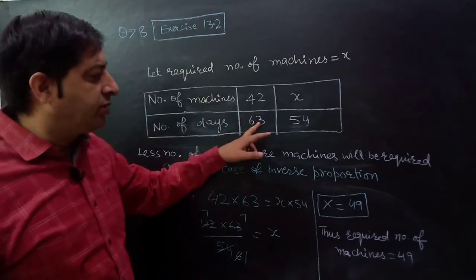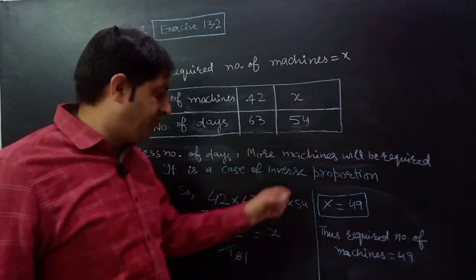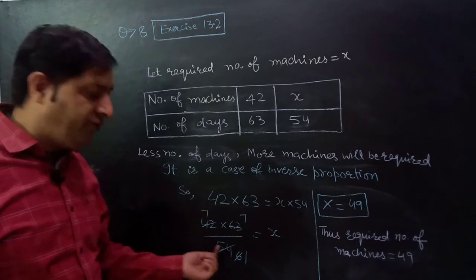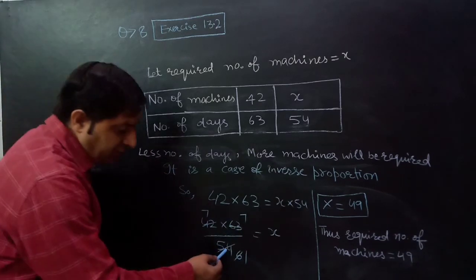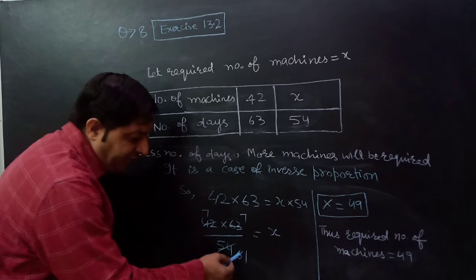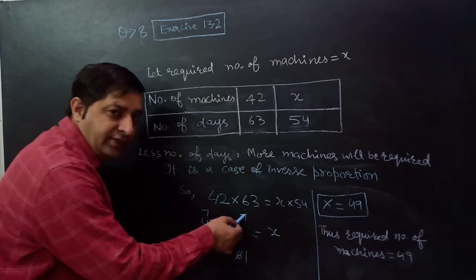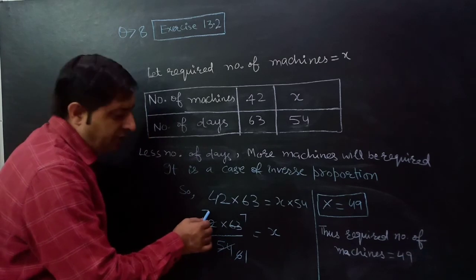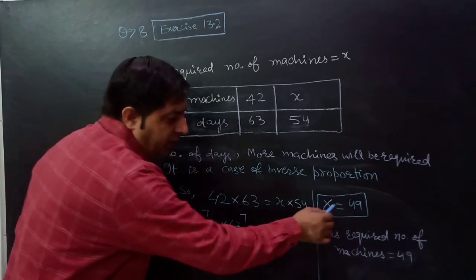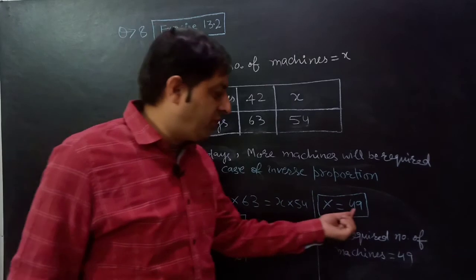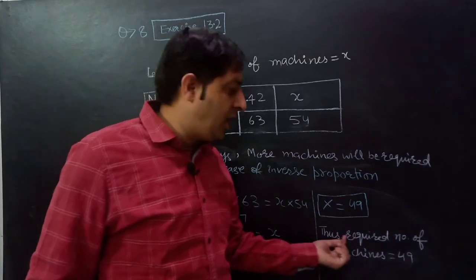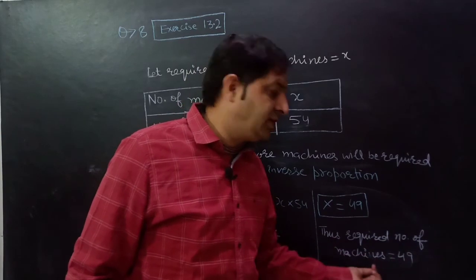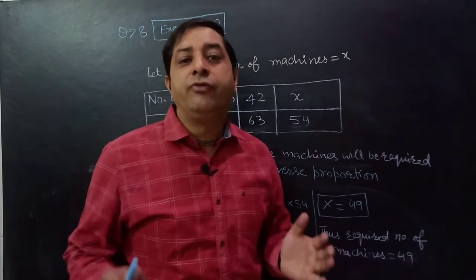So 42 into 63 must be equals to x into 54. Therefore x is equals to 42 into 63 upon 54. After cancellation with 9 and then with 6, we get 7 into 7 is 49. So x is equals to 49. Hence the required number of machines is equals to 49.